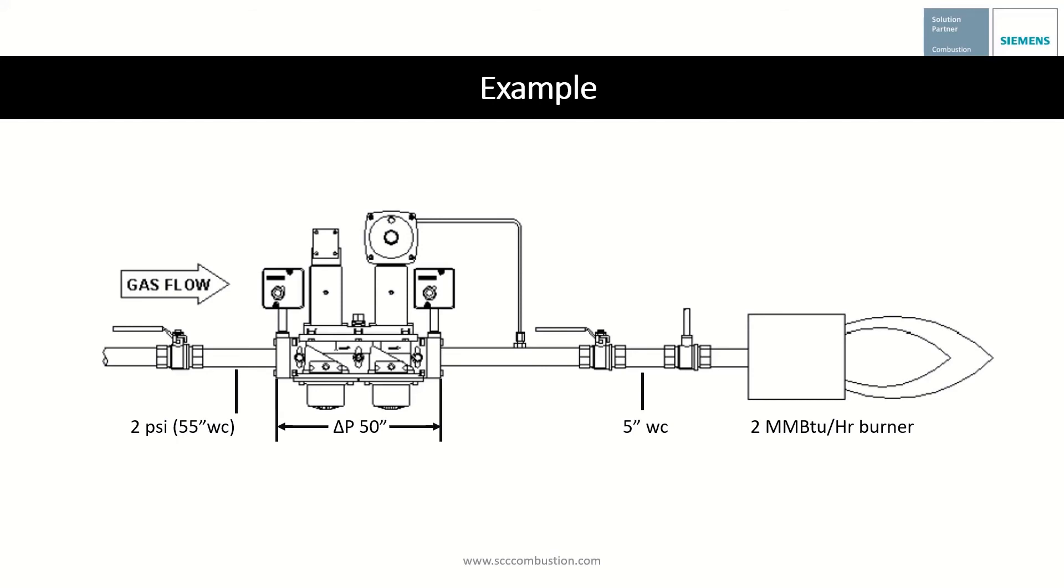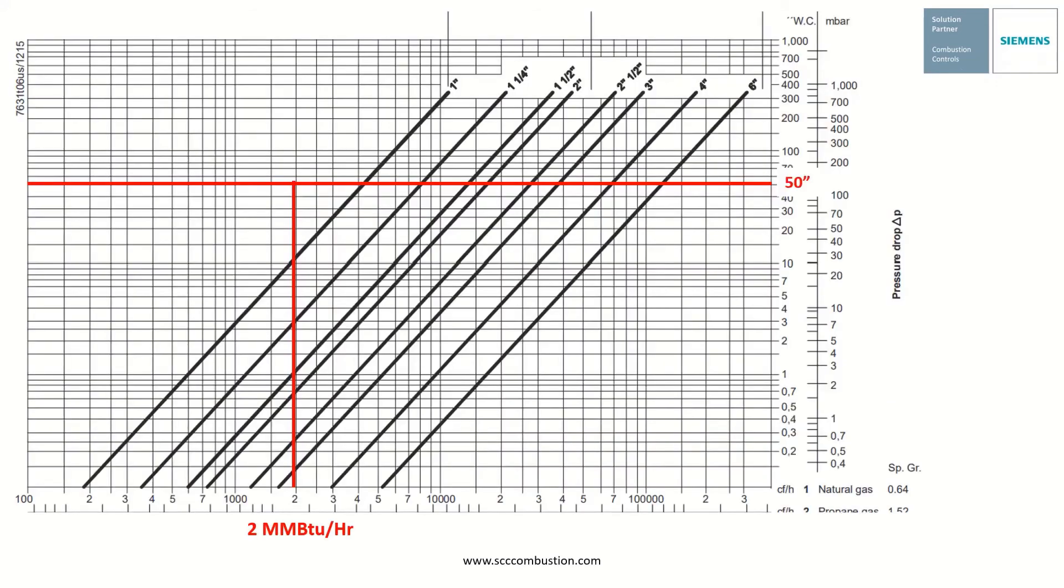Now let's look at the sizing chart to see how small our shutoff valve can go. Here is the sizing chart for Siemens double valves. Our 50 inches available drop and 2 million BTU per hour are marked in red. Our smallest double valve of 1 inch would be the answer here. The 1 inch double valve takes just over 10 inches of drop, which is well below the 50 inches differential available.